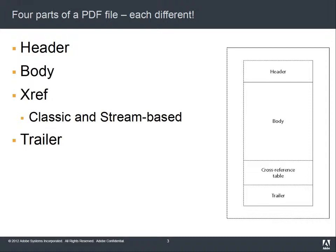There are four parts of a PDF file according to 32,000: the header, the body, the cross-reference table, and the trailer. Each one of them is totally different. For each one of these parts, you would need to validate it completely differently using a different syntax, a different grammar, different rules.